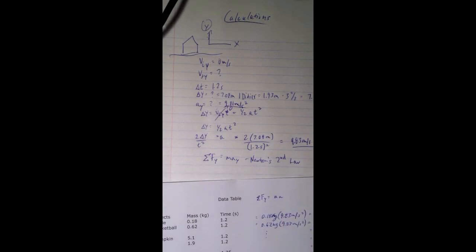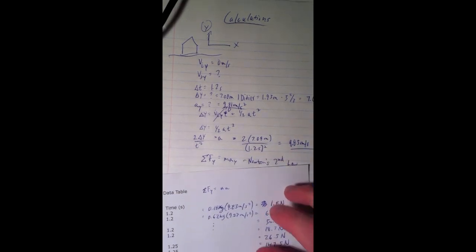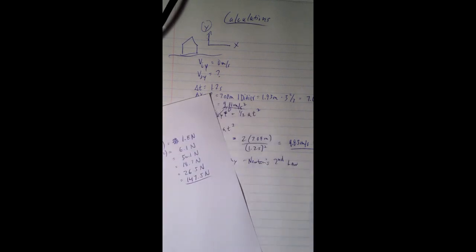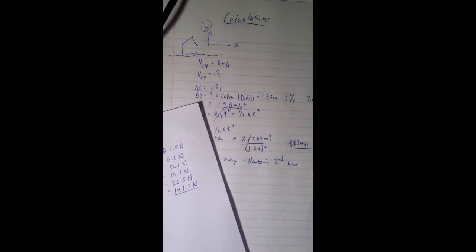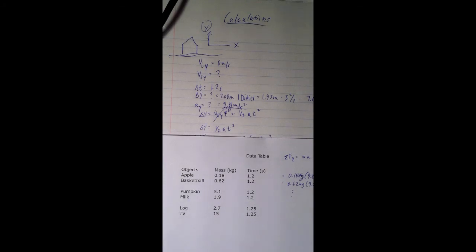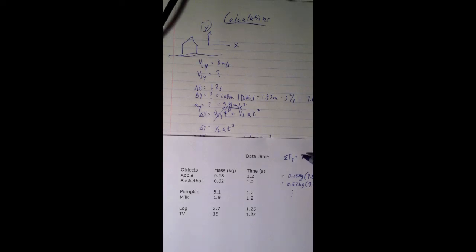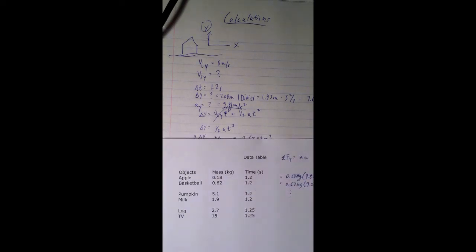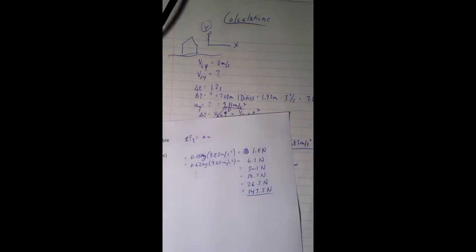So in conclusion here, we found that all objects do, in fact, fall at a constant acceleration. 9.83 meters per second squared. And then, based off of this acceleration value, we could find some force values in the y direction. And based off of the mass of the object, which we found earlier, you can calculate the force in the y direction. See how many newtons. That's pretty cool. Thanks for watching. That concludes our calculations portion.